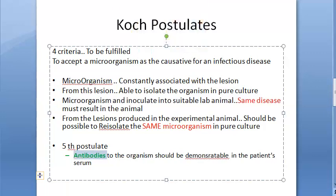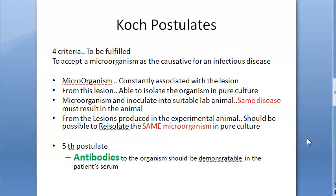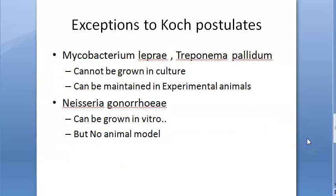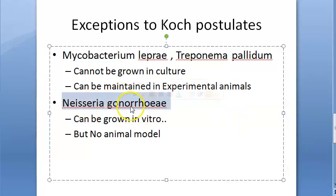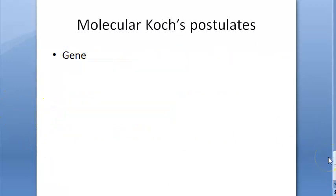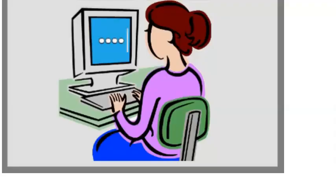The fifth postulate states that antibodies to the organism should be demonstrable in the patient's serum. Exceptions to Koch's postulates are Mycobacterium leprae and Treponema pallidum — they cannot be grown in vitro but can be maintained in experimental animals. Neisseria gonorrhoeae can be cultured in vitro but has no animal model. Molecular postulates were defined later to address genes. That's all for now — take a break, enjoy life, bye!